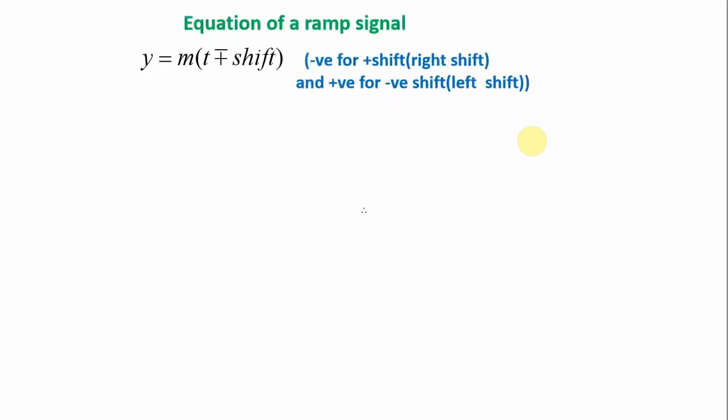The general equation for a ramp signal we can write it as y is equal to the slope multiplied by t minus or plus shift. Negative sign shifts the signal to the right and positive sign will shift the signal to the left.